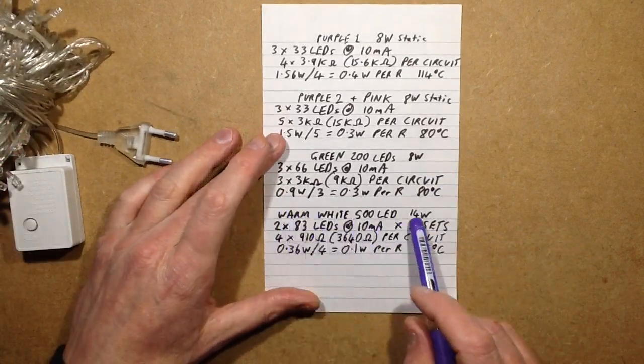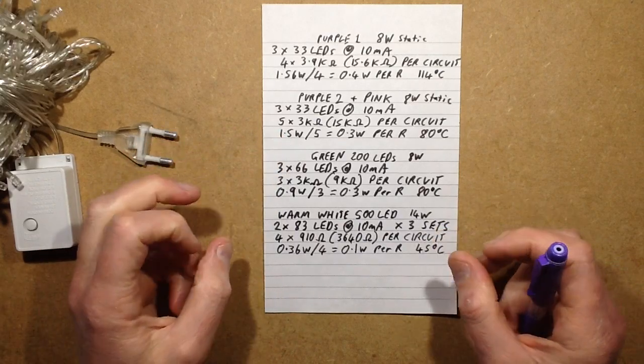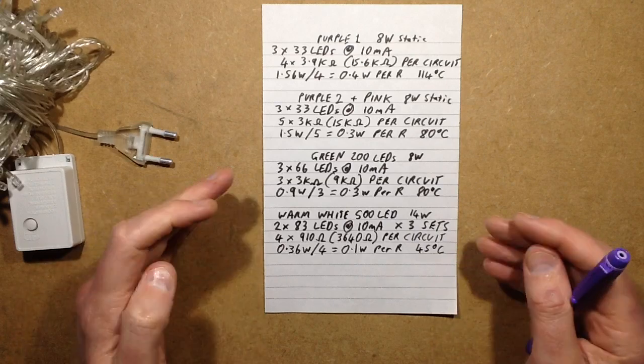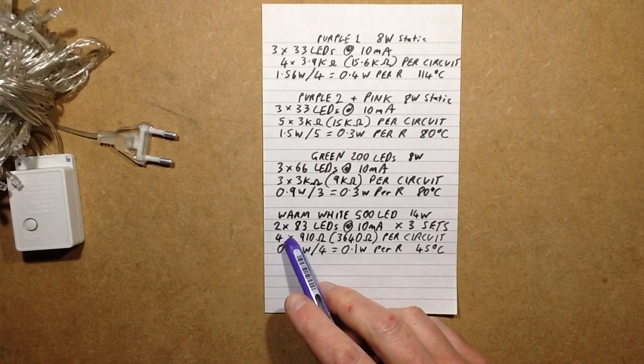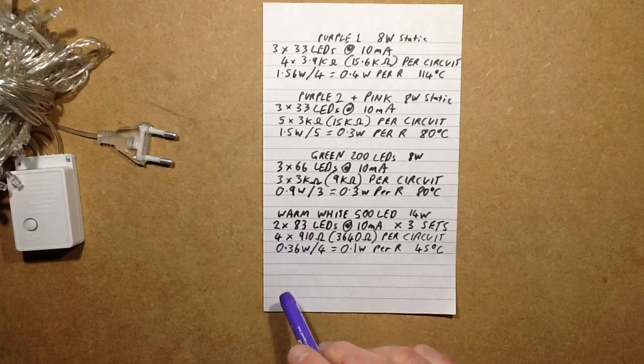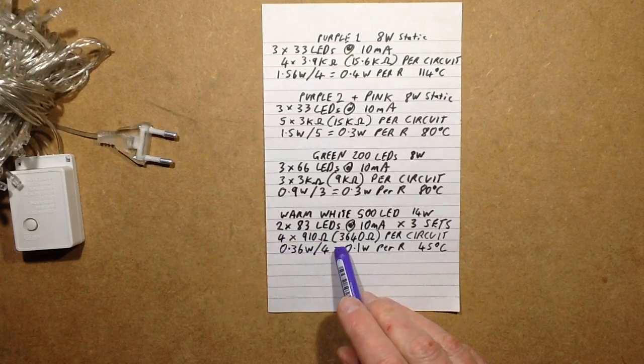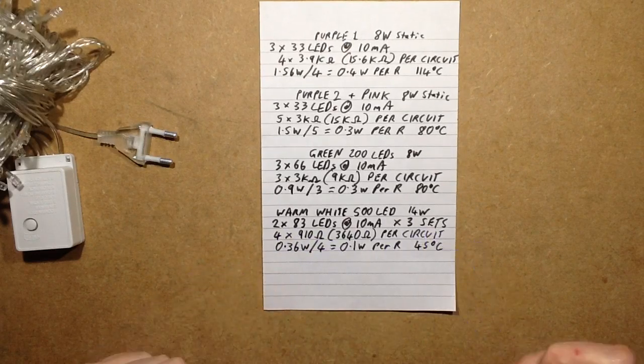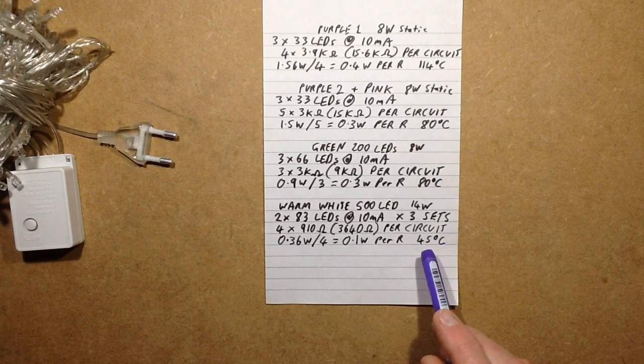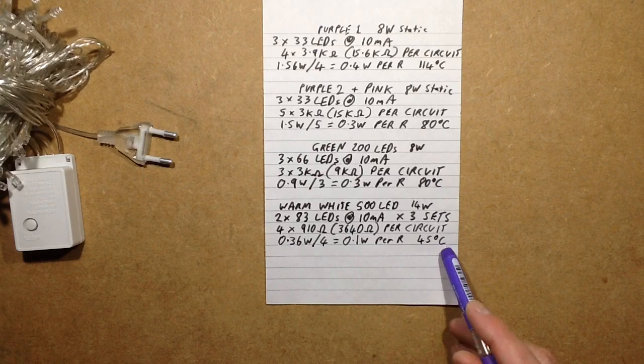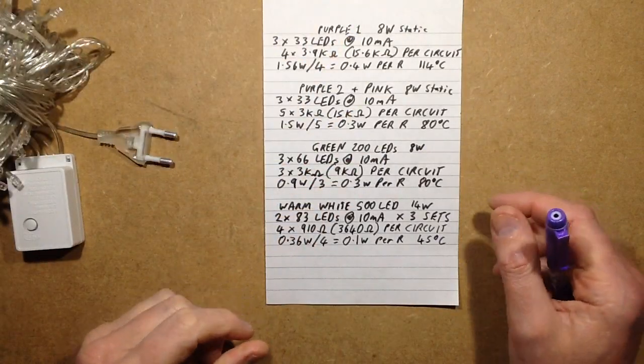The green 200 set is different. It's still divided into 3 channels, but it's divided the full 200 down into 66 LEDs at a time, and they've reduced the number of resistors accordingly - 3 × 3kΩ, 9kΩ per circuit. That means they've aimed again to dissipate about 0.3 watts, so it's 0.9 divided by 3 is 0.3 watts, and the resistors run at the same temperature as with the 100 sets, the lower power 100 sets. Then it comes to the warm white LED set with the 500 LEDs. What they've done here is they've got two sets of 83 LEDs in series, and then they've got three multiples of that, so that gives effectively six circuits across two channels. They've just got quite low value resistors - four 910Ω resistors giving a total of 3.6kΩ per circuit - and they're the only ones that run within a reasonable range for that resistor when they're on static. They run at a comfortable 45°C.